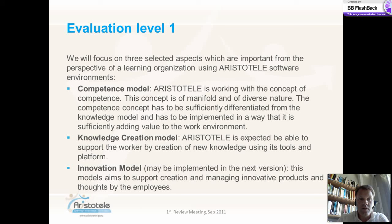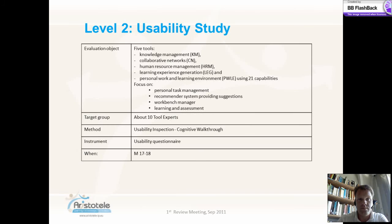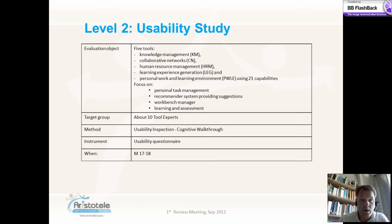The evaluation of this model will focus on three selected aspects important from the perspective of a learning organization using the Aristotle software environment: the competence model, the knowledge creation model and the innovation model. The second level, the usability study, focuses on five tools: knowledge management tool, collaborative networks tool, human resource management tool, learning experience generation tool, and personal work and learning environment tool with its A2.1 capabilities. We will perform a usability study in Work Package 10 with about ten tool experts following the methodology of a cognitive walkthrough and an attached applied usability questionnaire.